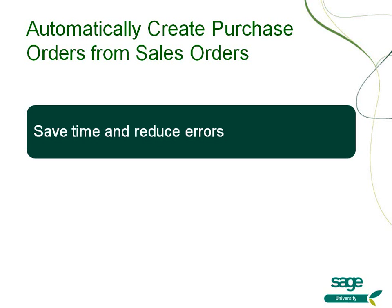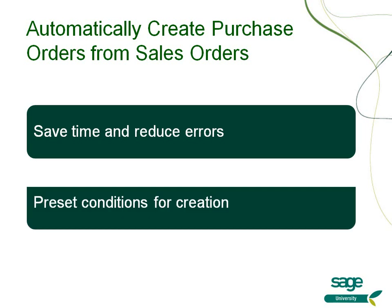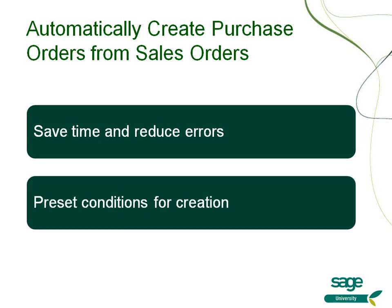Information will flow through to a purchase order without having to re-enter the information and thus remove potential data entry mistakes. You will be able to pre-set the conditions that you want to use for the creation of purchase orders directly from the sales order process to flow efficiently by entering the selection criteria. Let's take a look.